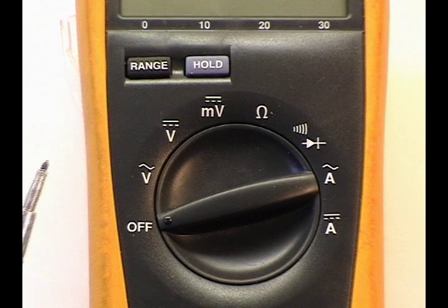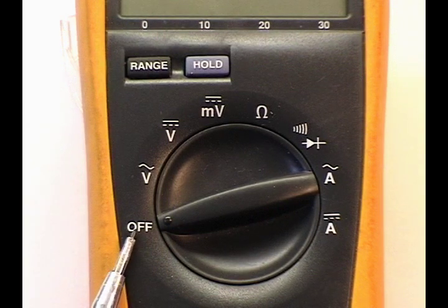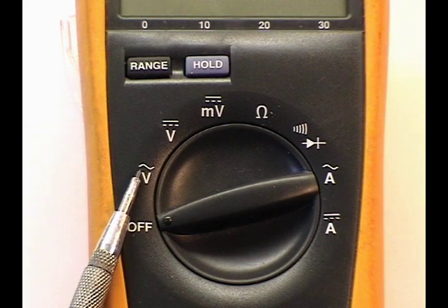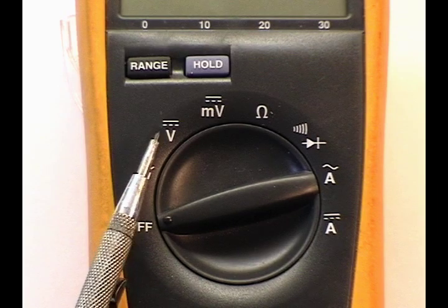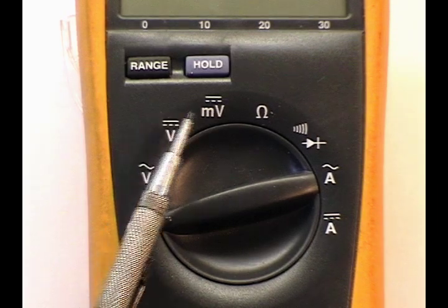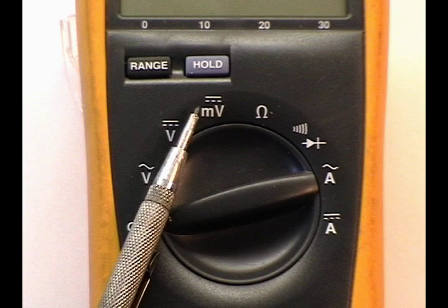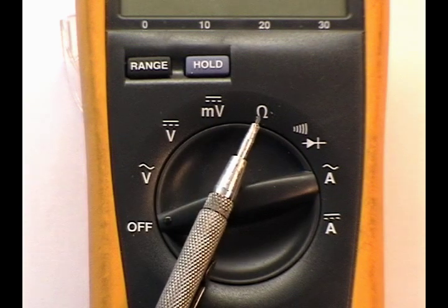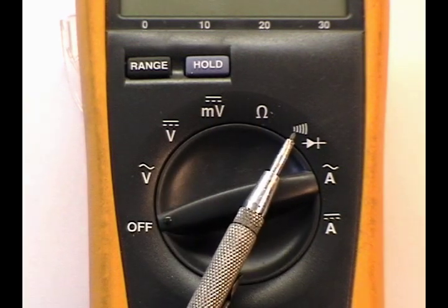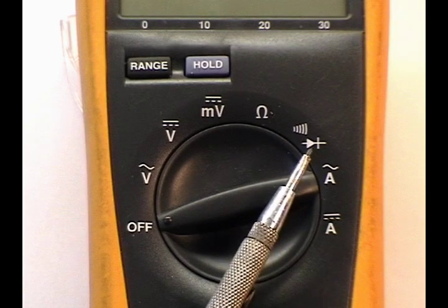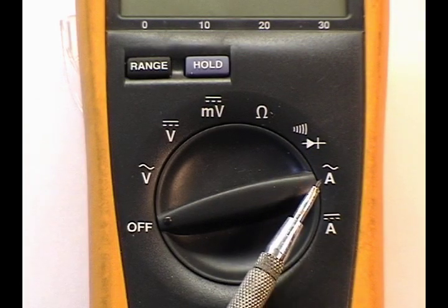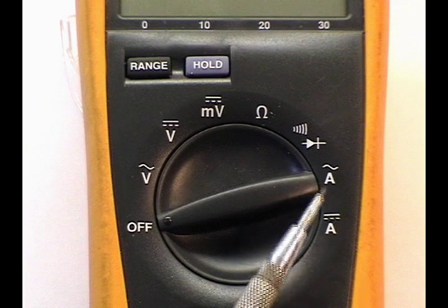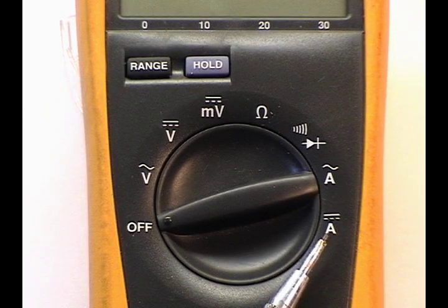The multi-mode dial has several options depending on usage: AC voltage measurements, DC voltage measurements, millivolt measurements, ohms or resistance, continuity check with audible beep, diode test, AC amperage, and finally DC amperage measurements.